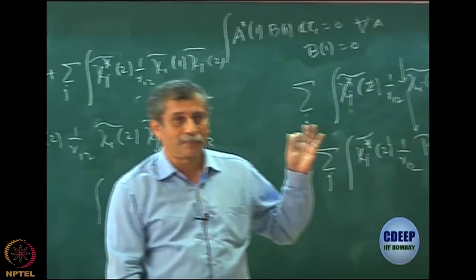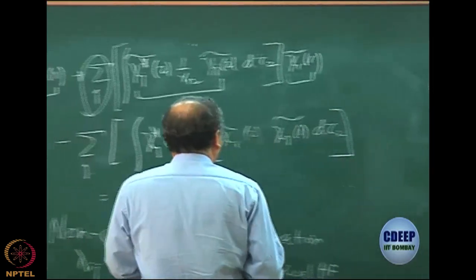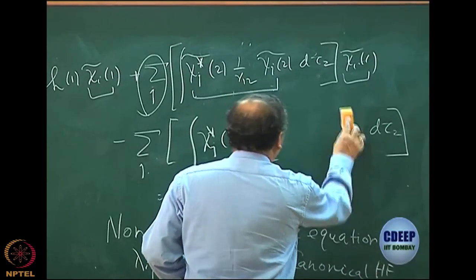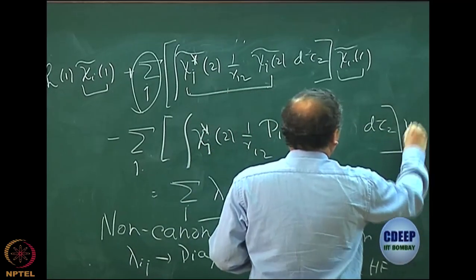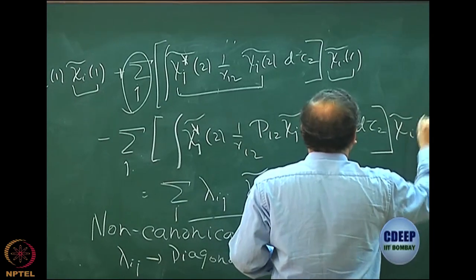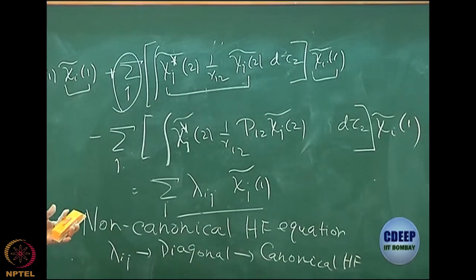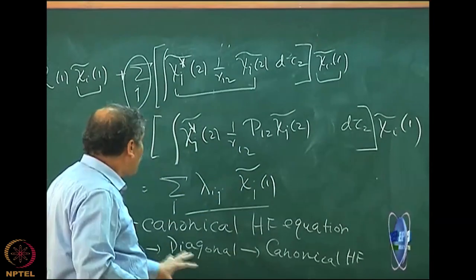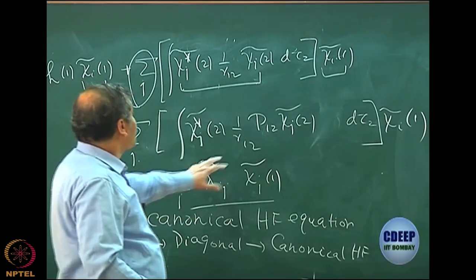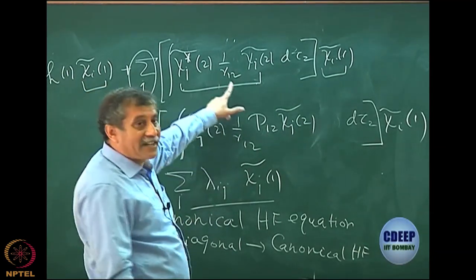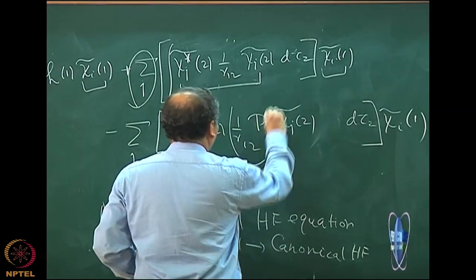What I did was simply nice mathematics — I just brought this inside P12 between 1/r_12 and chi i tilde. The moment I do this, P12 acting on the right: this two will be equal only if I have interchanged 1 and 2 on the right because P12 acts only on the right. I am going to bring the permutation operator here and then write this term very easily. So now this term is written as the integral of chi j star 2, 1/r_12, P12, chi j tilde 2, d tau 2, acting on chi i tilde 1. Beautiful — we have something acting on chi i tilde 1.